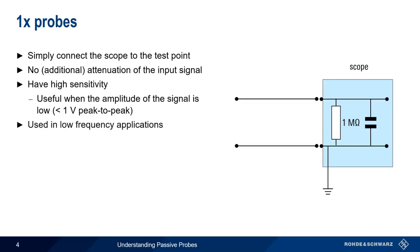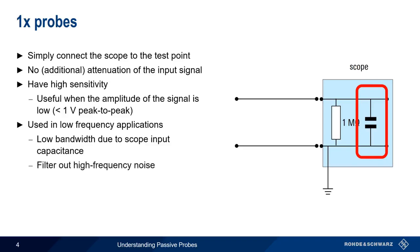1x probes are also suitable for low-frequency applications. Why? A 1x probe has low bandwidth, because the input capacitance of the scope acts as a type of low-pass filter. In low-frequency applications, this can actually be an advantage, such as the case where we want the probe to filter out high-frequency noise on the measured low-frequency signal.